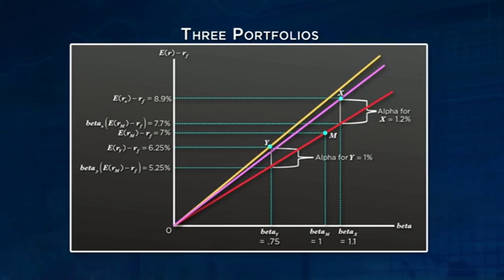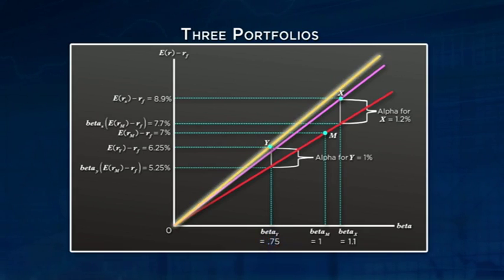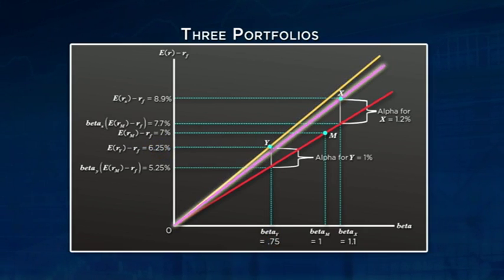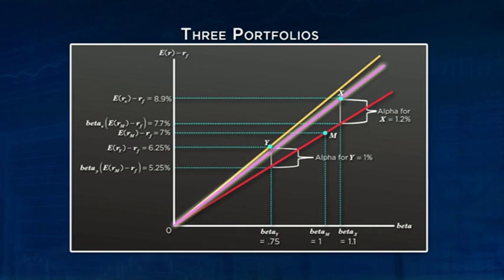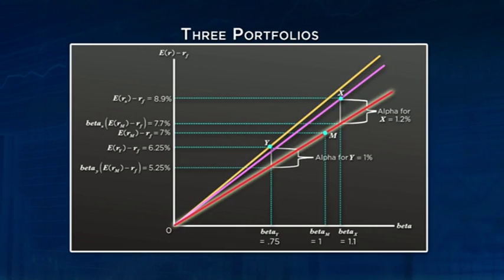Let the other two portfolios be denoted by X and Y — portfolios Ichabod wants to evaluate. Let's say that Y has a beta of 0.75 and an expected excess return of six and a quarter percent. X has a beta of 1.1 and has an expected excess return of 8.9 percent. Also imagine a line from the origin going through point Y — call this the OY line — and a line from the origin through point X — call this the OX line. As we move up and down the OM line, the beta and the excess return rise and fall as implied by CAPM. We can use this line as a benchmark.